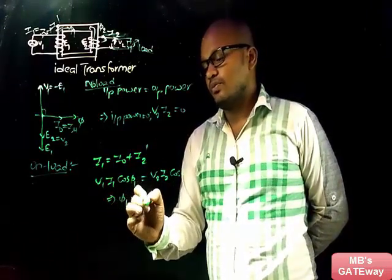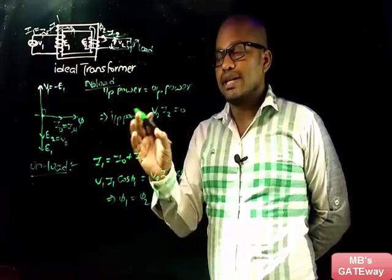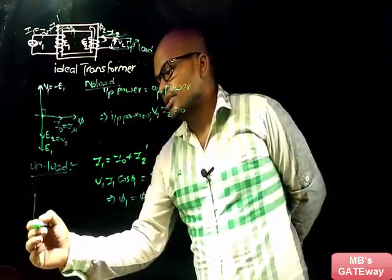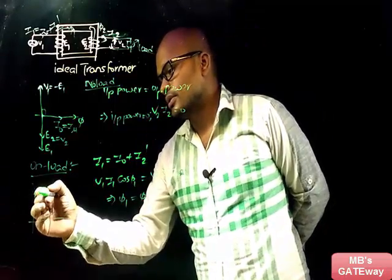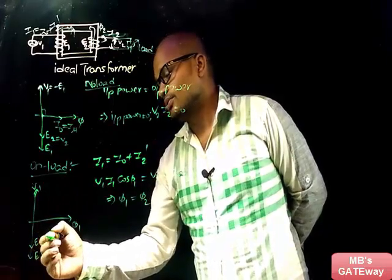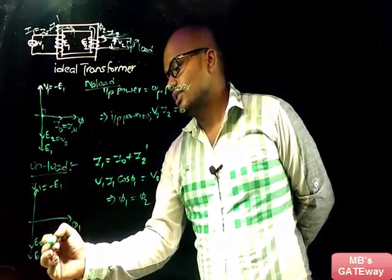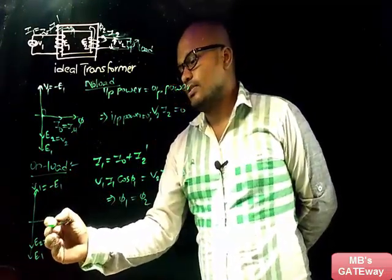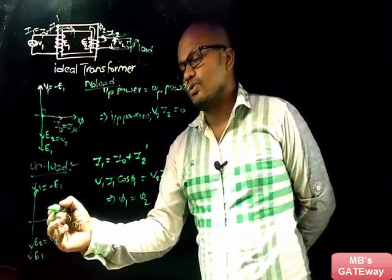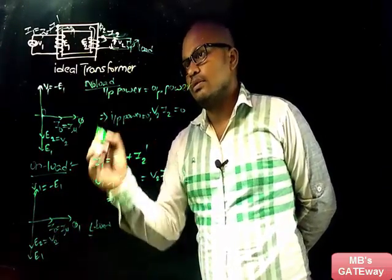To satisfy this condition, phi1 must equal phi2, which implies that in the loaded ideal transformer, the transformer draws power at the load power factor from the input. In the phasor diagram for the loaded transformer, E1 and E2 are shown. Since there are no losses, V1 equals minus E1 and E2 equals V2. I₀ equals Iμ.